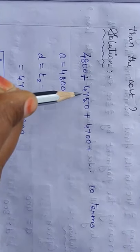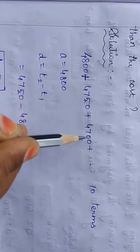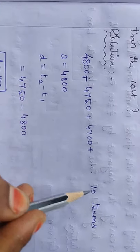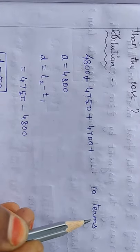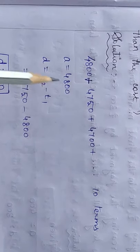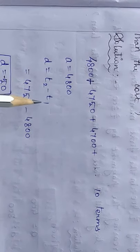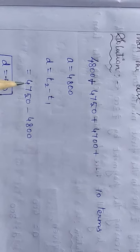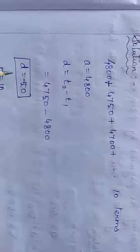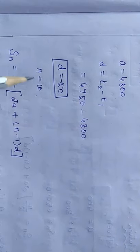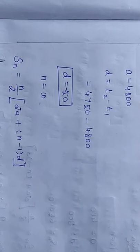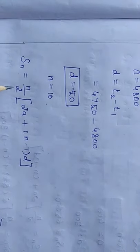The first month is Rs.4,800, second month is Rs.4,750, third month is Rs.4,700. So, d = -50. N is 10 installments, so n = 10. Using the sum formula, Sn is equal to n divided by 2.